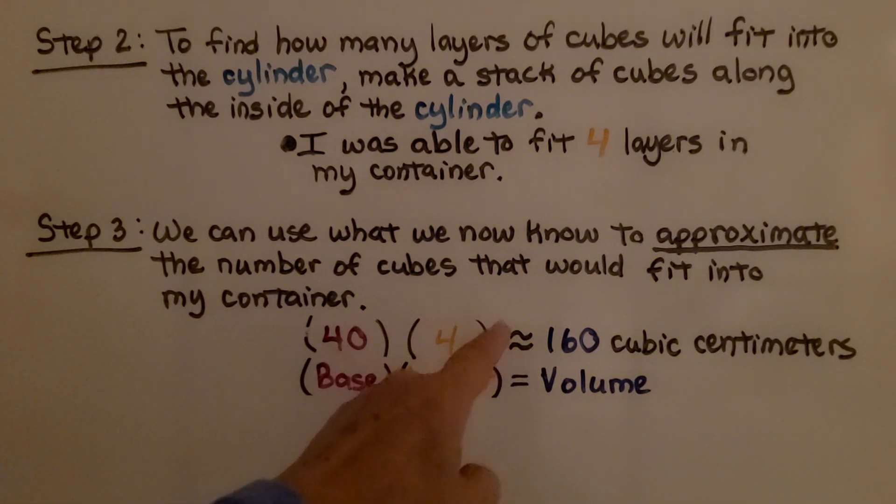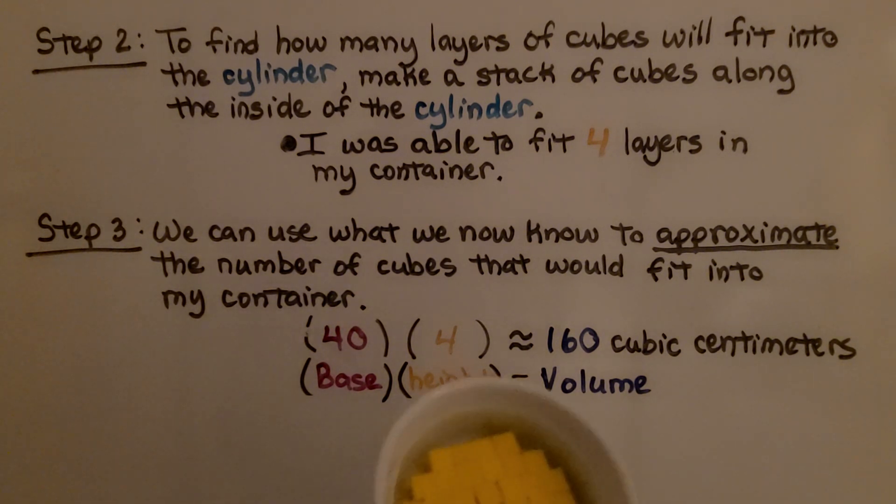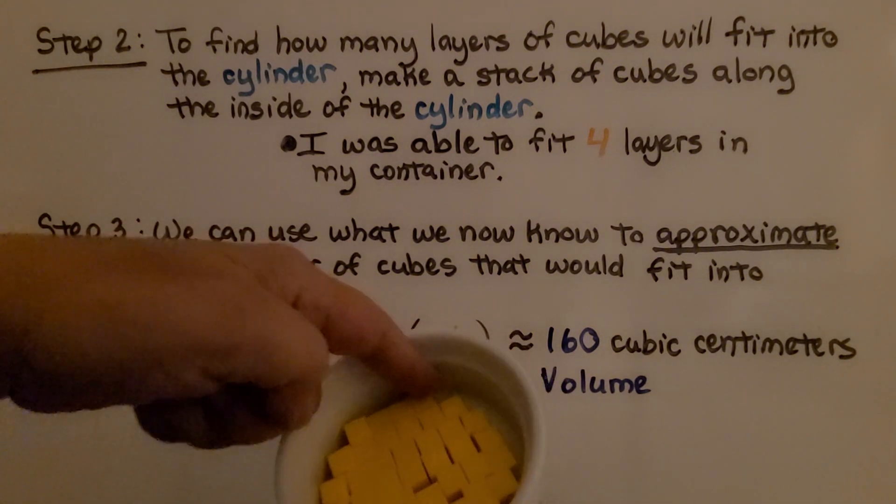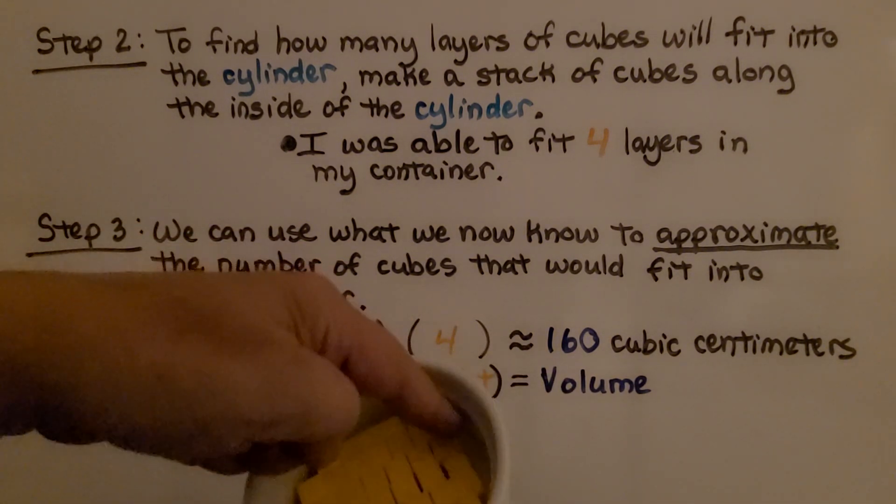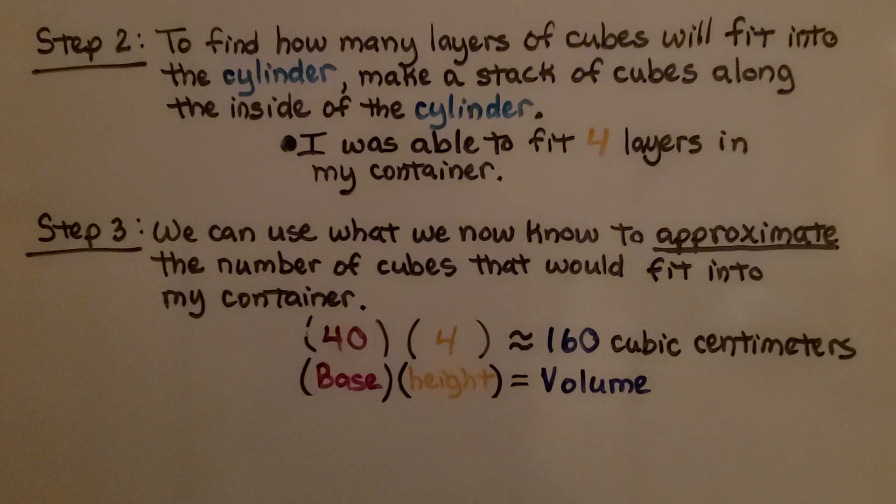So we know it's going to be approximately 160 for the volume. It's not exactly 160 for the volume of my dish because I have some empty spaces here. It's not quite full because of all these empty edges. So the base multiplied by the height is going to equal the volume.